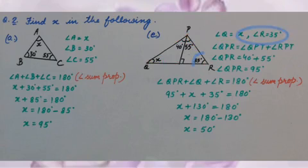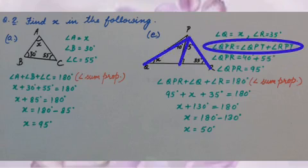If we see, angle Q is X, angle R is 35 degrees, and angle QPR equals angle QPT plus angle RPT. My dear students, you can see where a single angle is given, I am writing the angle name with a single letter. When more than one angle is given at a point, we should write angle names in 3 letters.